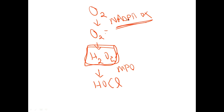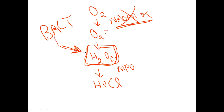If a patient is deficient in NADPH oxidase, there actually is another way hydrogen peroxide can be generated: most bacteria naturally produce a little bit of hydrogen peroxide. So for the vast majority of bacteria, if we're lacking NADPH oxidase, we can simply take the hydrogen peroxide from the bacteria and then produce bleach that way. Patients with chronic granulomatous disease really don't have a problem with most organisms for this reason.